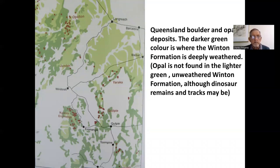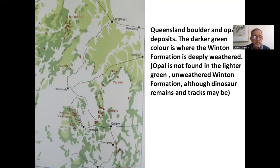Detailing the Queensland deposits, the dark green colour is where the Winton Formation is deeply weathered. Opal is not found in the light green areas, which is the unweathered Winton. You may still, however, find dinosaur remains and tracks in those regions, such as around Longreach, and even Blackall in the embayment of the Surat Basin extending south-westward of Longreach.